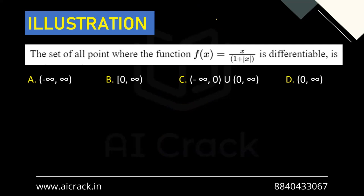The next question is kept as homework — it's a straightforward question. Just find the critical points the same way we did, then check differentiability at each of those points.